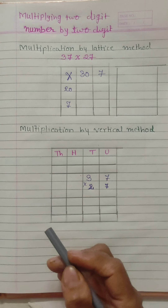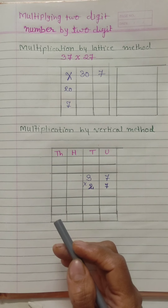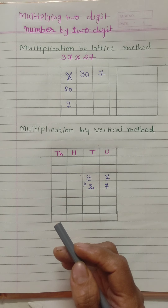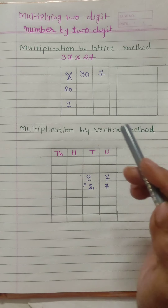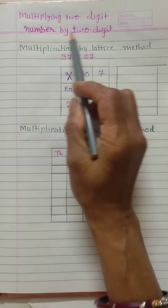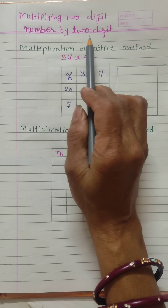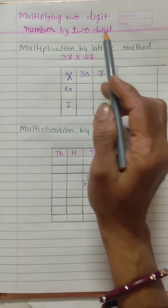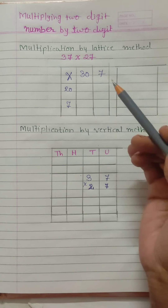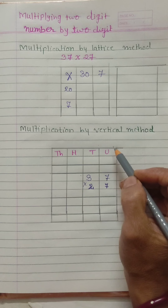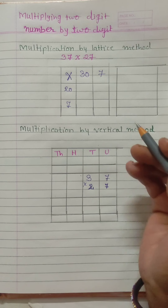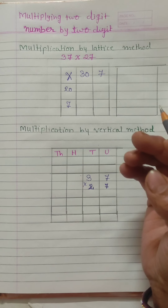Hello children. In the last video we learnt about a new method of multiplication — the vertical method — and we multiplied 3-digit numbers by 1-digit. In this video we will learn multiplying 2-digit numbers by 2-digit. We will do both methods: the lattice method and the vertical method, and we will compare which is easier and simpler.